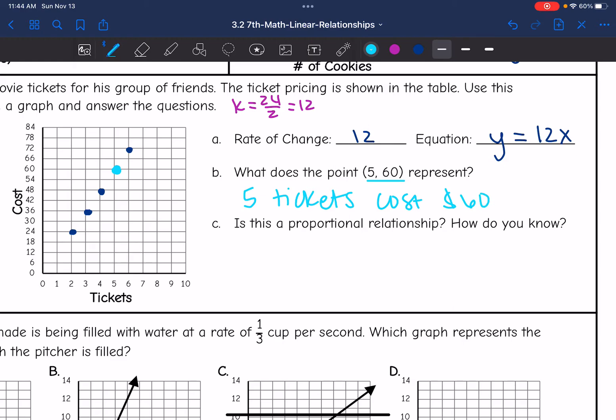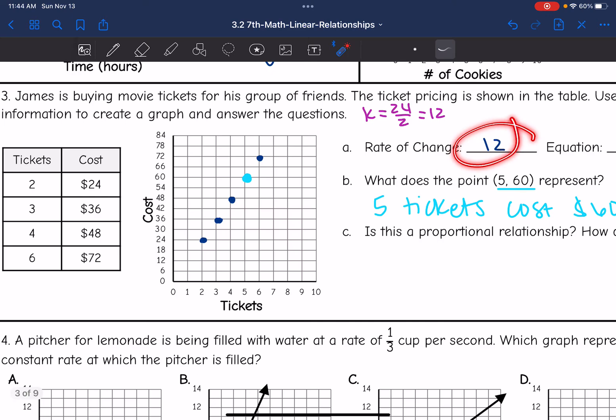Then part C says, is this a proportional relationship? And how do you know? So there's two ways that we can determine if something is a proportional relationship. First of all, we're going to see that multiplicative relationship in the table. So my rate of change was 12.